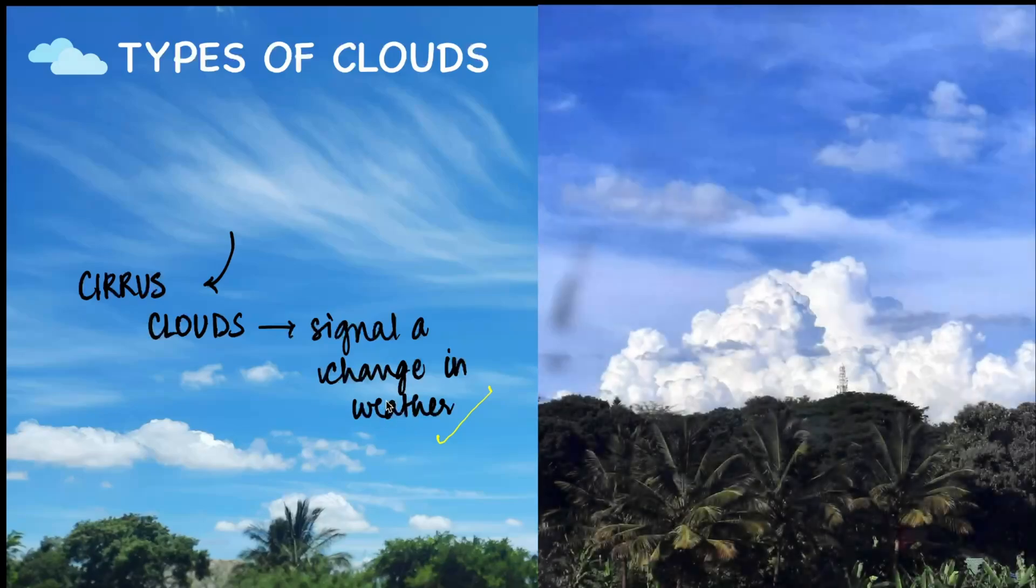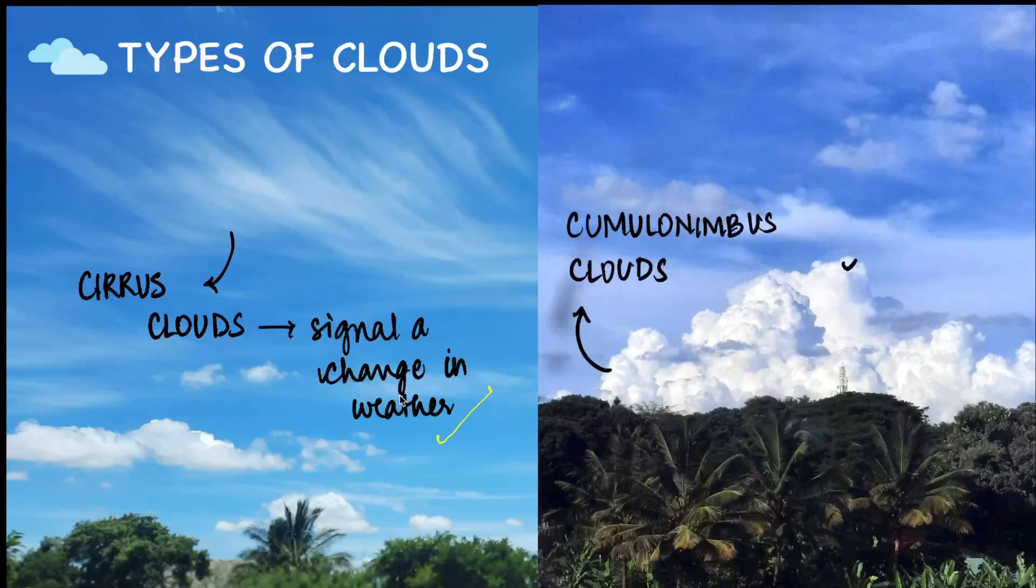While sometimes clouds tend to look fluffy, almost like a cauliflower. Now, what you see on your screen is a cumulonimbus cloud, which are large, towering and dense clouds which look like a cauliflower. This is actually an indication that a thunderstorm might be coming soon.